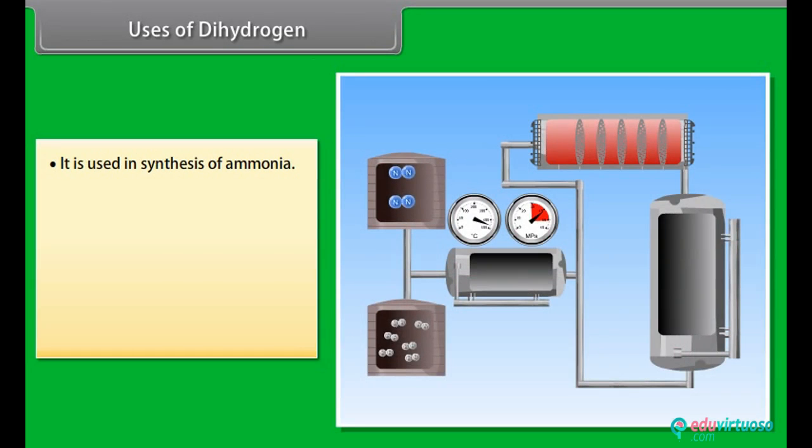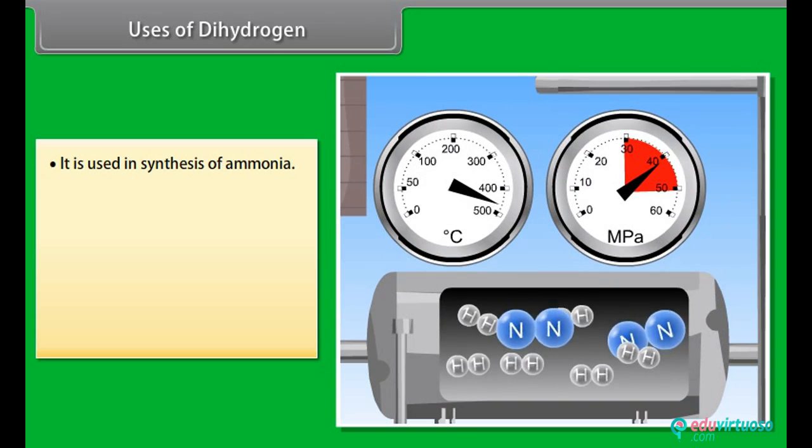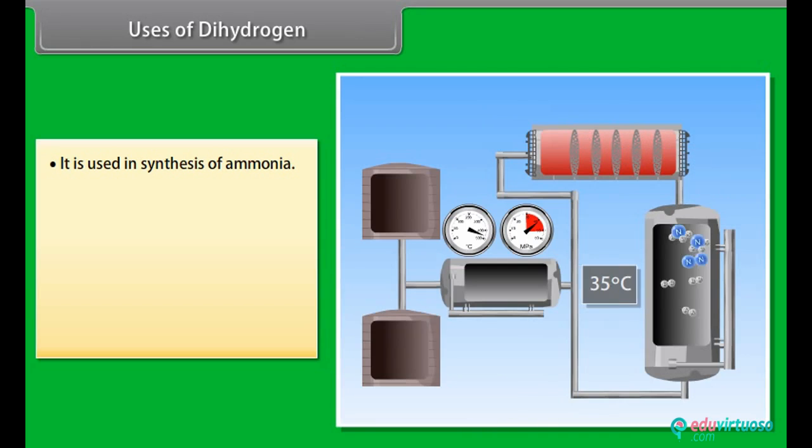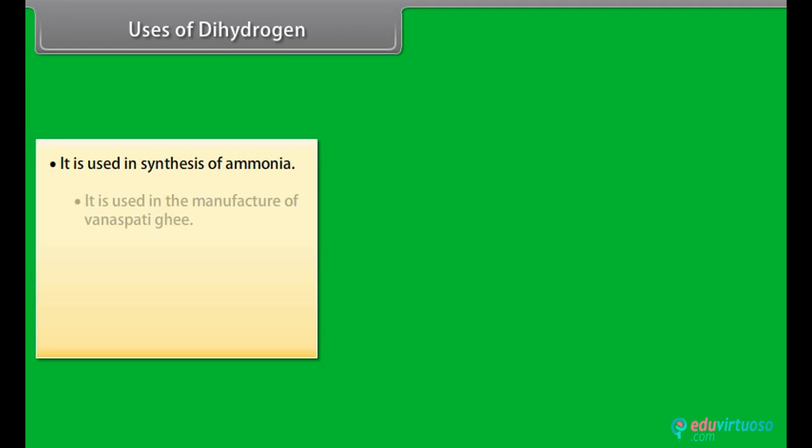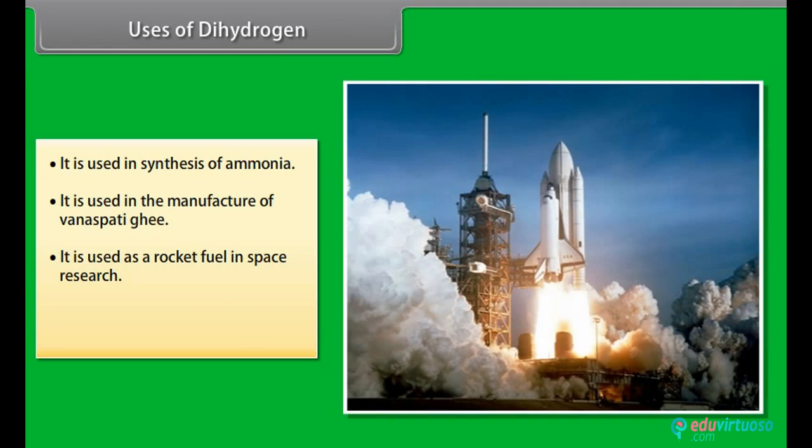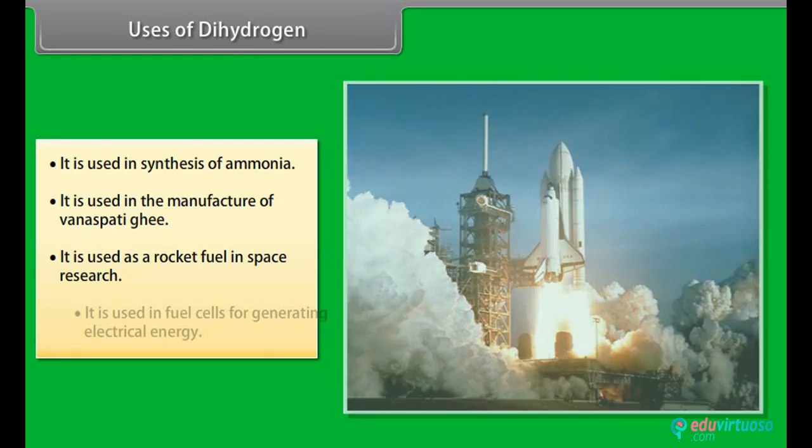Uses of dihydrogen: It is used in synthesis of ammonia. Nitrogen and hydrogen passed to heater where these are heated up to a certain temperature. After that, they are compressed and then passed to heater, where the reaction takes place. After that, the mixture is passed to waste heat boiler, from which ammonia is cooled and then stored, and nitrogen and hydrogen are recycled. It is used in the manufacture of vanaspati ghee. It is used as a rocket fuel in space research. It is used in fuel cells for generating electrical energy.